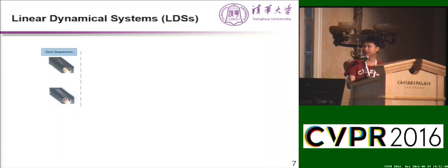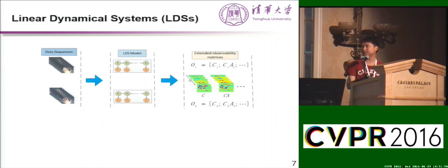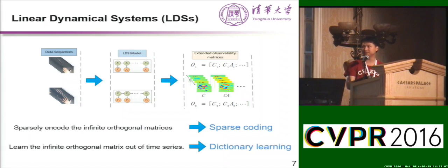To recap: suppose we are given a video, we model the video with an LDS model, and then we represent the LDS with the extended observability matrix. Now I am going to show something very exciting: I am going to sparsely encode the infinite-dimensional observability matrix. This is the sparse coding problem. I am also going to learn the infinite-dimensional observability matrix from time series data, and this is called dictionary learning.